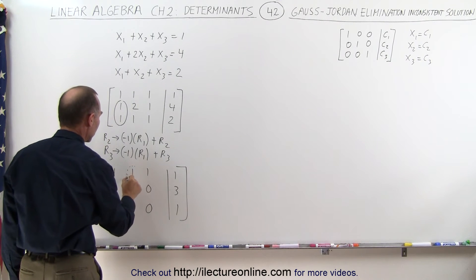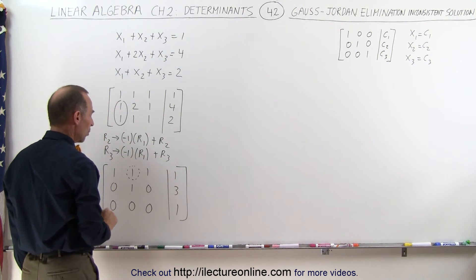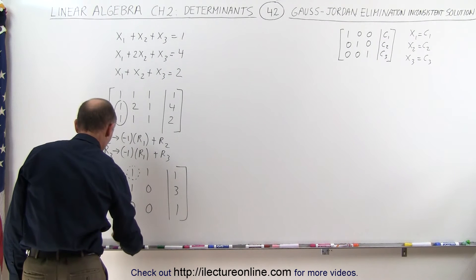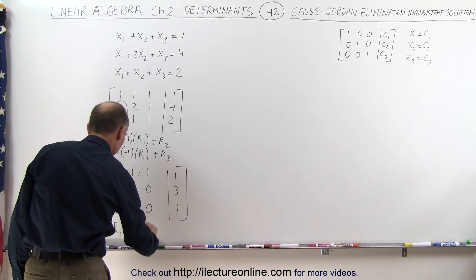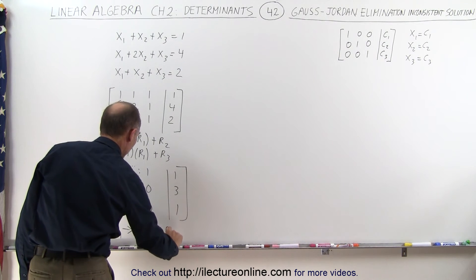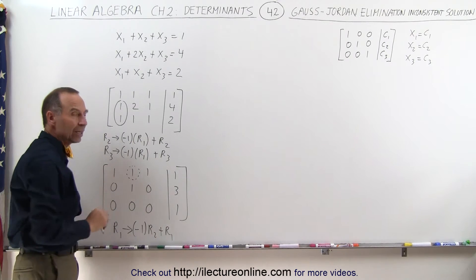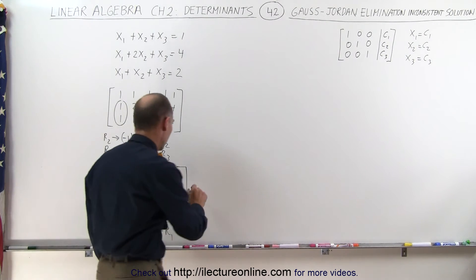Let's get rid of the 1 in the first row's second column to simplify the matrix a bit more, by taking negative 1 times row 2 and adding it to row 1.